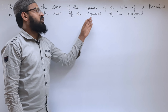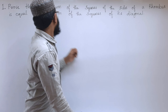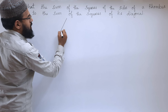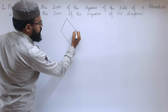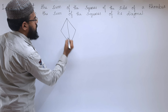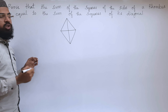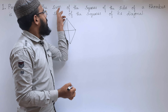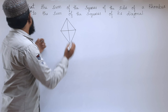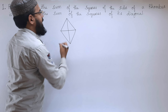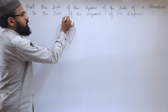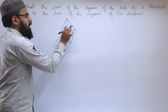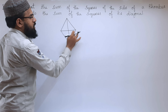First problem: prove that the sum of the squares of the sides of a rhombus is equal to the sum of the squares of its diagonals. So, what they are saying is, if we square the sides and add them, that sum is equal to the sum of the squares of the diagonals. We have to show that these are equal.